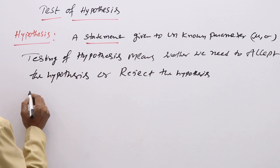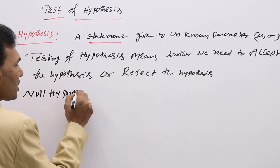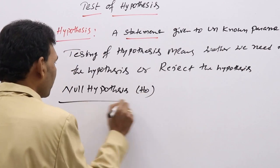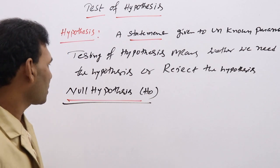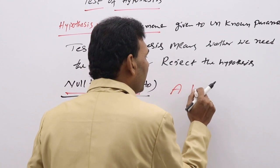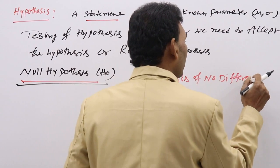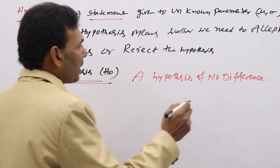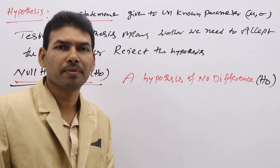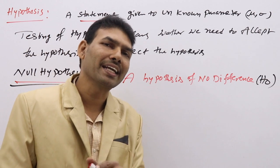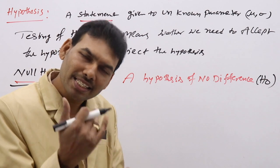Hypothesis are two types. One is null hypothesis, represented by H0. Another one is alternative hypothesis. Null hypothesis is a hypothesis of no difference, represented by H0. If you want to test a statement without having any difference, taking it as yes — for example, if I say average mean is 30, in null hypothesis we will take yes, average mean is 30.